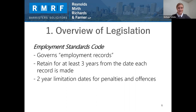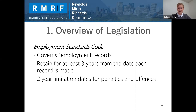The Employment Standards Code is another piece of legislation with rules for document retention. The Code requires employers to maintain certain types of employment records, including things like the start date of employment, paid earnings, vacation time taken, and termination notices. The Code requires that these employment records be retained for at least three years from the date that each record is created. The Code also provides for a two-year limitation period for penalties and offenses under the Act, so that limitation date again comes into play when considering how long to keep your records.